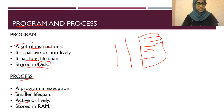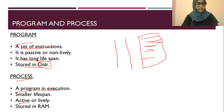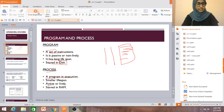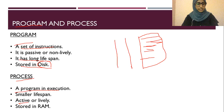A process is stored in RAM. A program is stored in secondary memory. When you write a C program, it is stored in secondary memory. But when that program is executed, it is brought into primary memory — the RAM. That is the key difference between program and process.